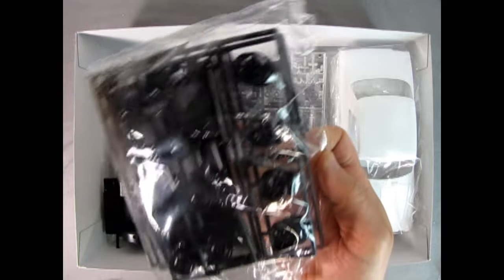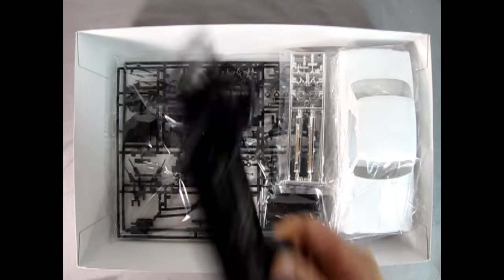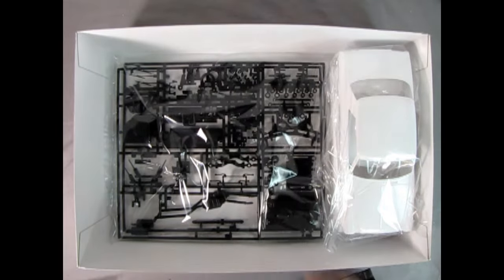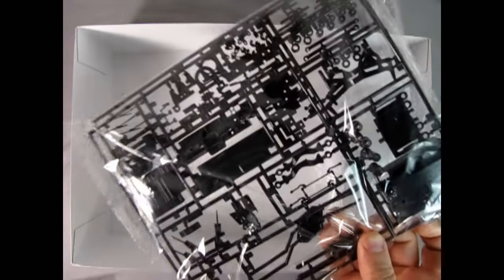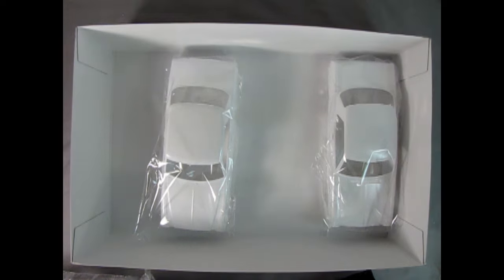And then we've got black molded plastic here as well as two chassis pans. We have our chrome duplicated again and our final black component part tree duplicated twice. And then here you get not one but two car bodies. So I'll clear this out of the way and we'll take a look at what's going on in the instructions.